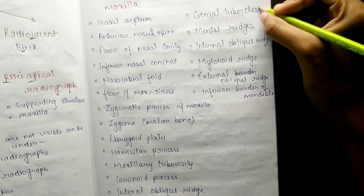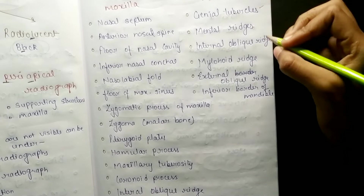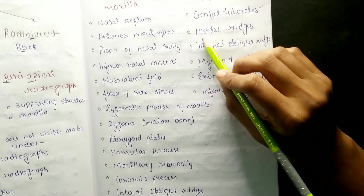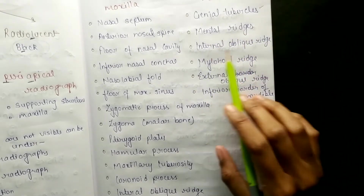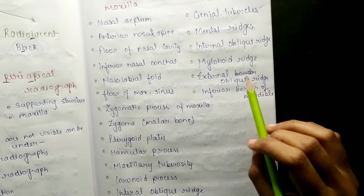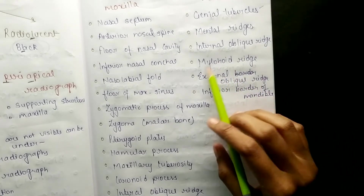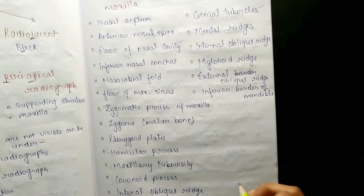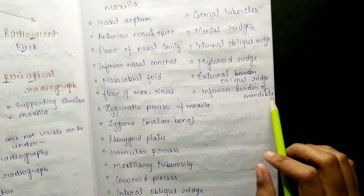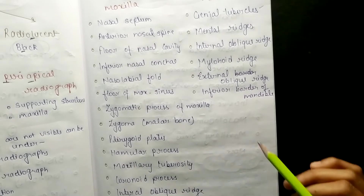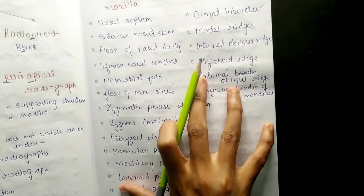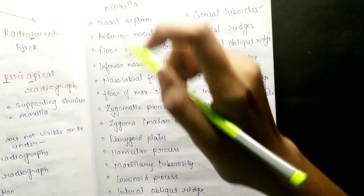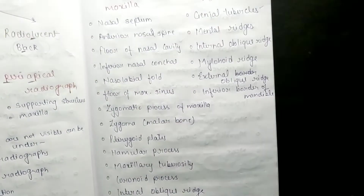In the mandible, the radiopaque visible structures are: genial tubercles, mental ridge, internal oblique ridge, mylohyoid ridge, external oblique ridge, and inferior border of mandible. If you can remember all of these, that's excellent, but even if the maxilla and mandible lists are not fully memorized, the six basic tooth structures must be known.